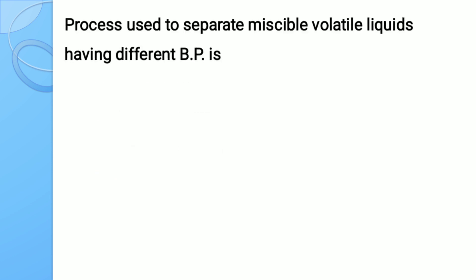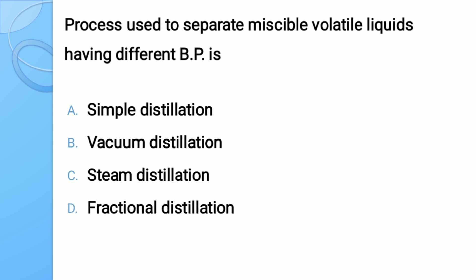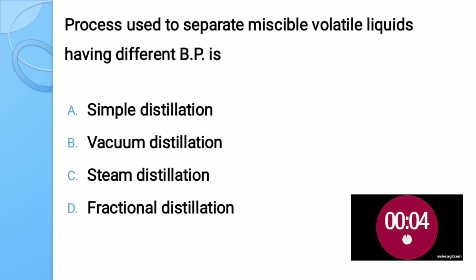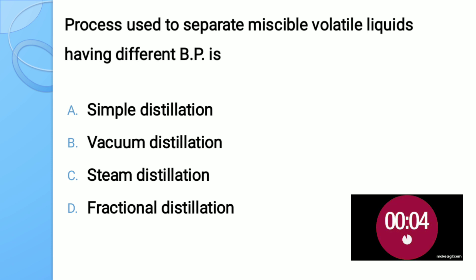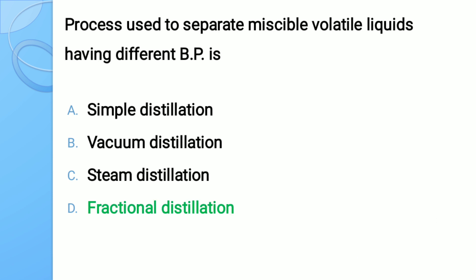Question number twelve: The process used to separate miscible volatile liquids having different boiling points is — options: A) simple distillation, B) vacuum distillation, C) steam distillation, D) fractional distillation. The correct answer is fractional distillation.